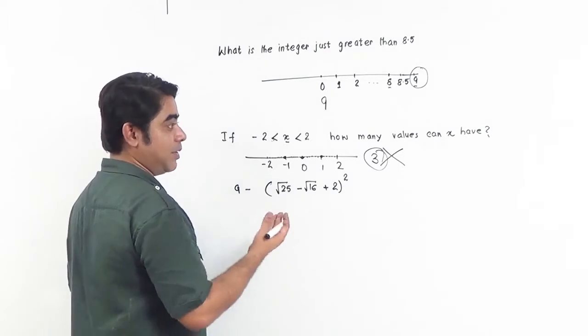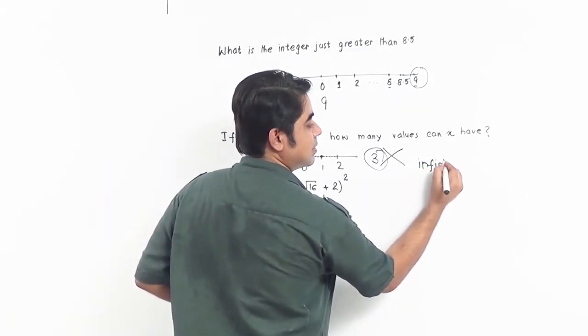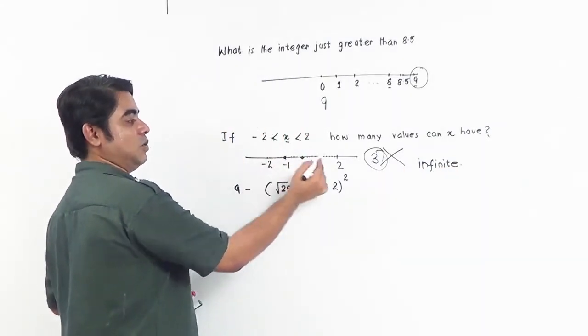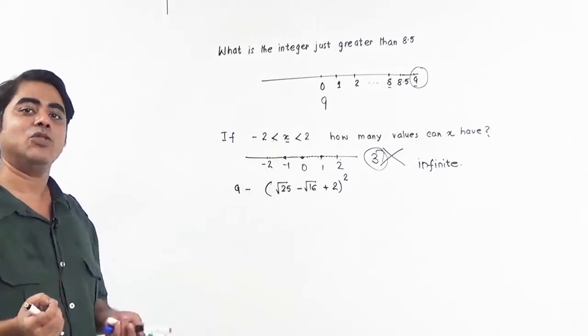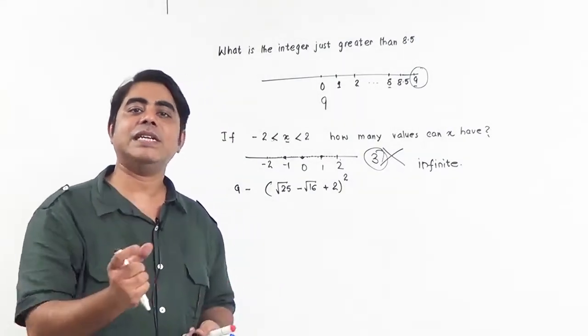It can have infinite values between minus 2 to plus 2, because between any two numbers there are infinitely many real numbers present. Between 1 and 2, how many numbers are present? Infinite numbers are present.